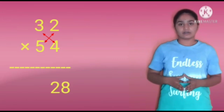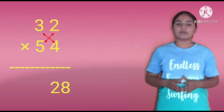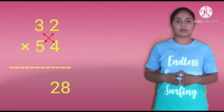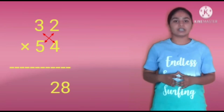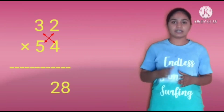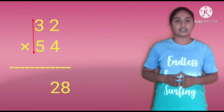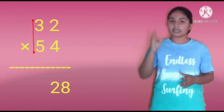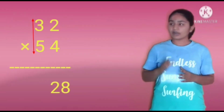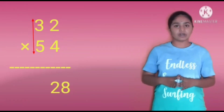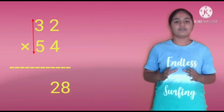Next, we have to do cross multiplication: 3 into 4 and 5 into 2. It will be 12 and 10. Add these both numbers, we will get 22. So, write the 2 in the 10th place and keep the other 2 as carry. Next, multiply the last digits: 3 into 5 equals 15. Add the carry to 15, it will be 17. So, write 17 before the number 28. Our answer will be 1728.